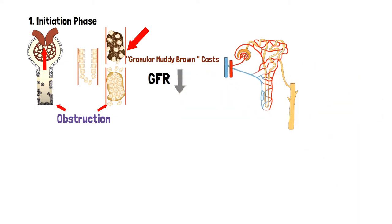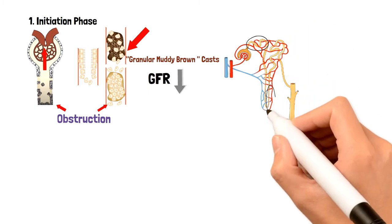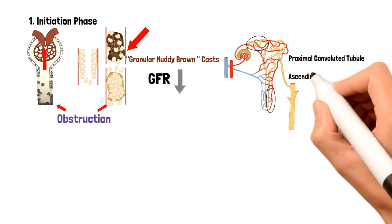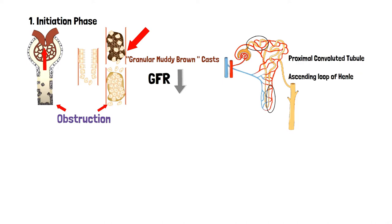The proximal convoluted tubule and the thick ascending loop of Henle are more susceptible to ATN damage. The reason is that these parts of the nephron are involved more in active transport of ions and require ATP. So if they don't have enough oxygen, they can't make enough ATP, making them more susceptible to this damage.